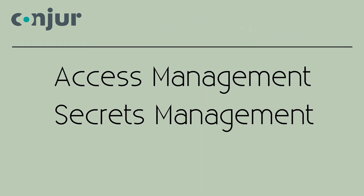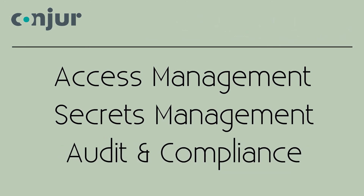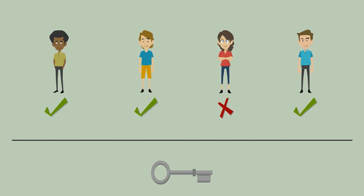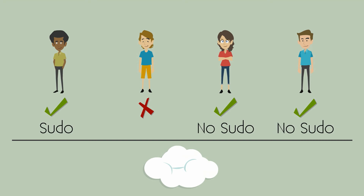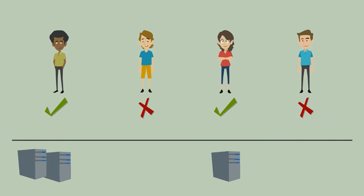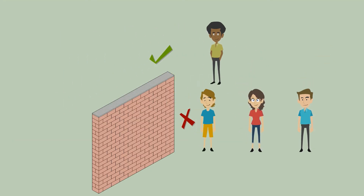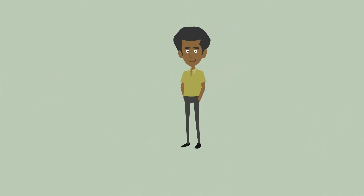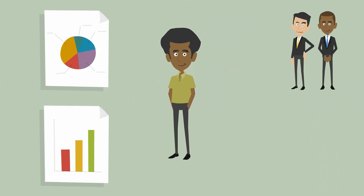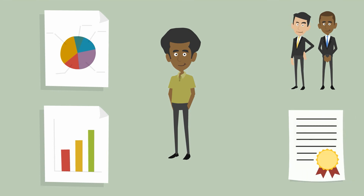Conjure helps you solve problems like access management, secrets management and audit and compliance. Conjure's customers use the platform to gain visibility into who has access to keys, secrets and cloud infrastructure and what they can do within it. They manage server and system provisioning permissions and protect customer data stored in production environments, all while demonstrating compliance when preparing for audits related to winning customer business or obtaining regulatory certifications.